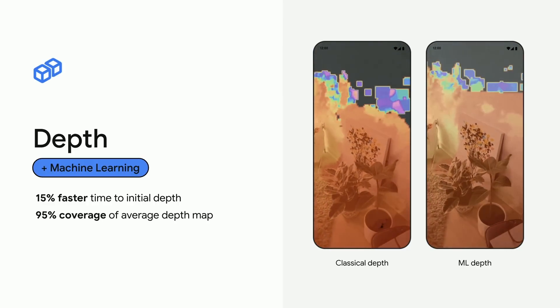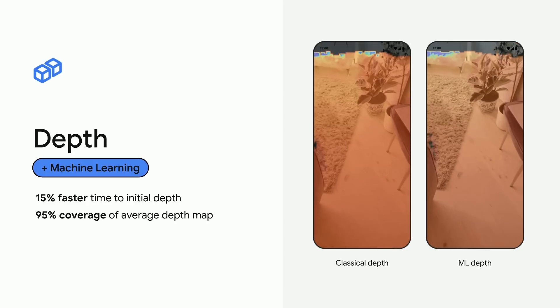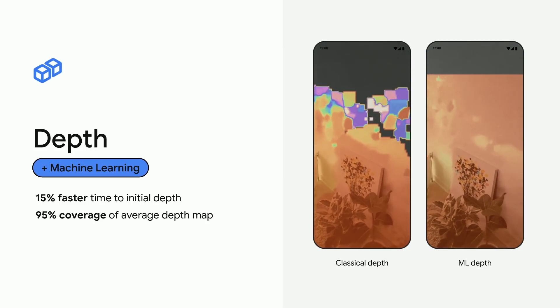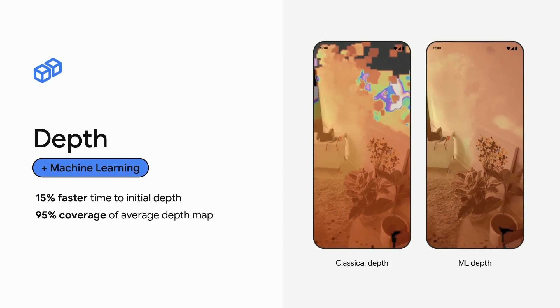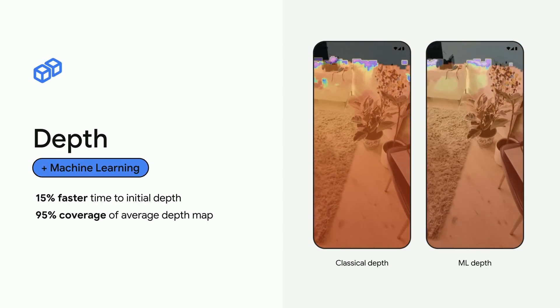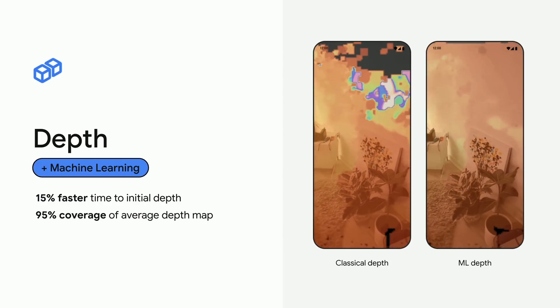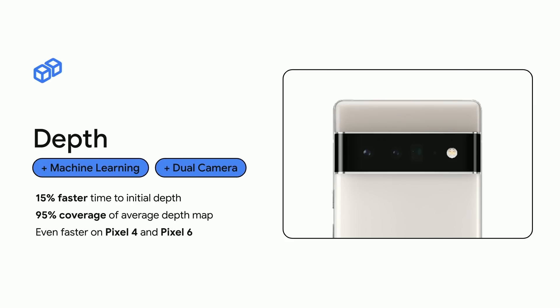Depth coverage is now comparable to the amount of coverage in dedicated depth hardware. This also helps out motion tracking, with a further 8% reduction in the time to the first plane, and an increase in the number of planes accurately found of about 25%. And on select Pixel phones, we can use the existing second camera to get depth even faster. This dual camera depth further speeds up the time for initial depth while also speeding up motion tracking. It only needs to run for a little bit at startup, so this has a minimal effect on battery life.